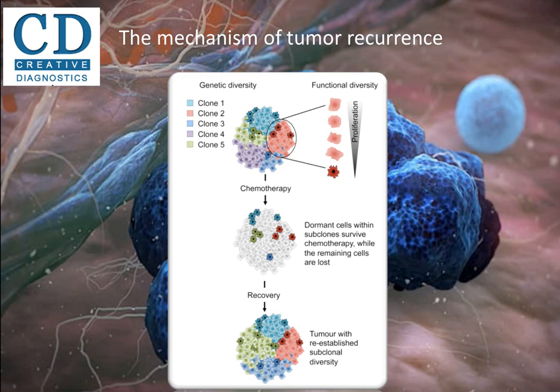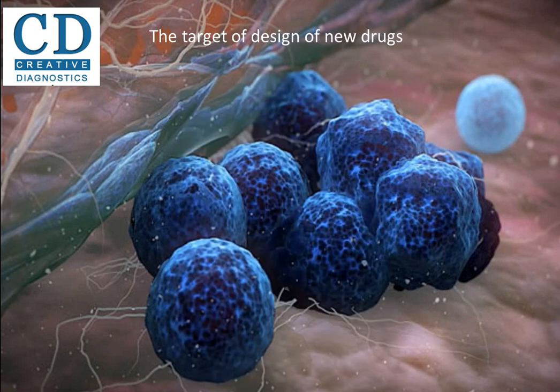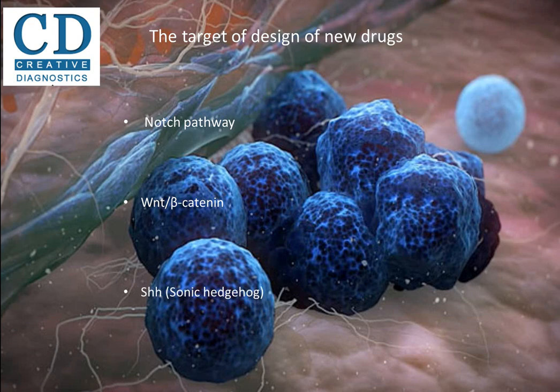Following therapy, these cells can seed a new cancer. The design of new drugs for targeting CSCs requires understanding the cellular mechanisms that regulate cell proliferation. According to previous studies, among the signal pathways that regulate the function of stemness, the most studied are Notch, SHH (Sonic Hedgehog), and WNT/beta-catenin signaling pathways.